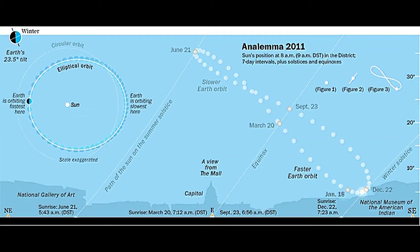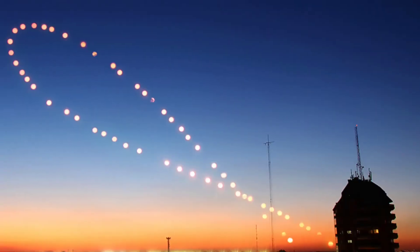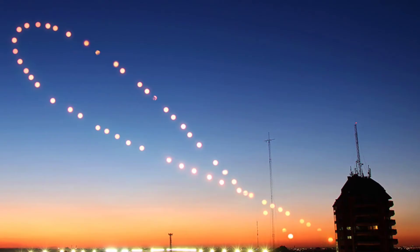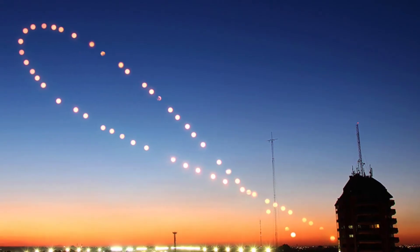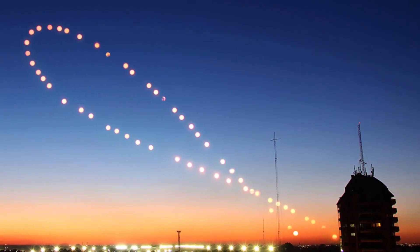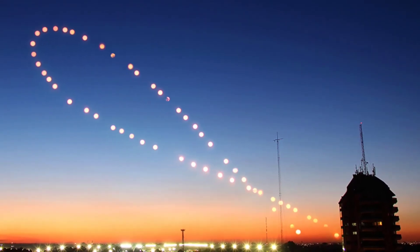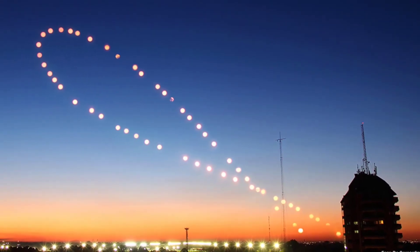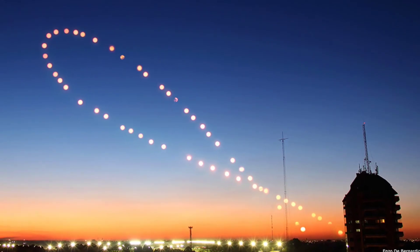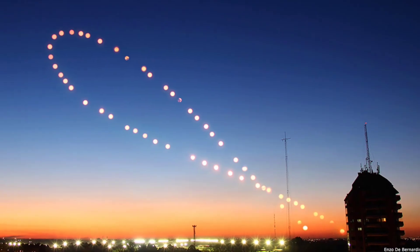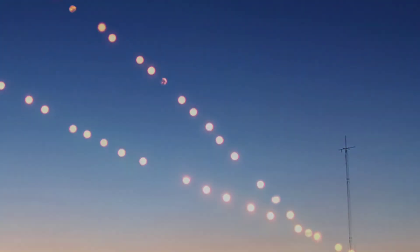The orientation of the analemma is location-dependent. The angle of the figure eight will change depending on your latitude. In the southern hemisphere, the analemma will be reversed, with the larger part on top.